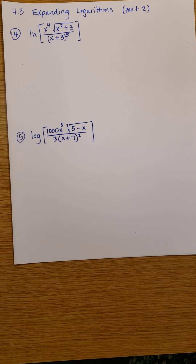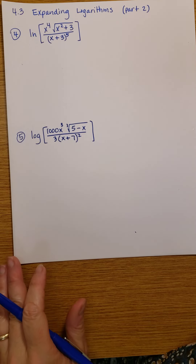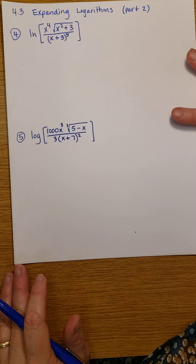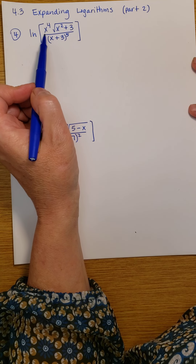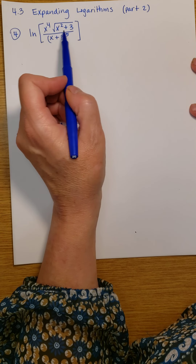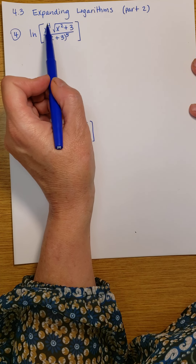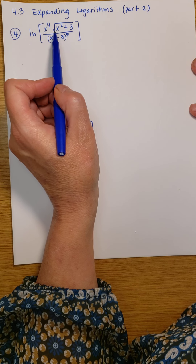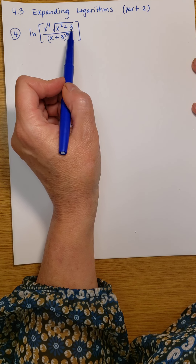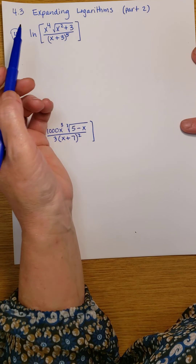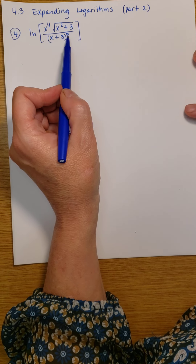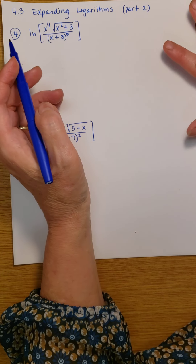Now for examples 4 and 5 of expanding logarithms. Here I have a quotient — the natural log of a quotient where the numerator is x to the 4th times the square root of the quantity x squared plus 3, and in the denominator I have the quantity x plus 3 raised to the 5th power.